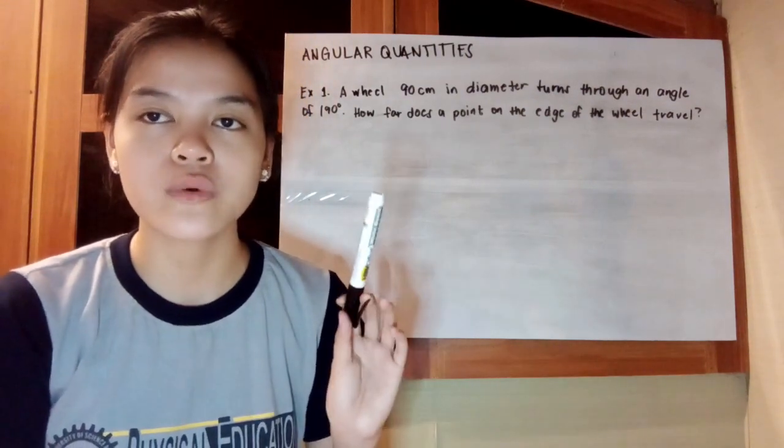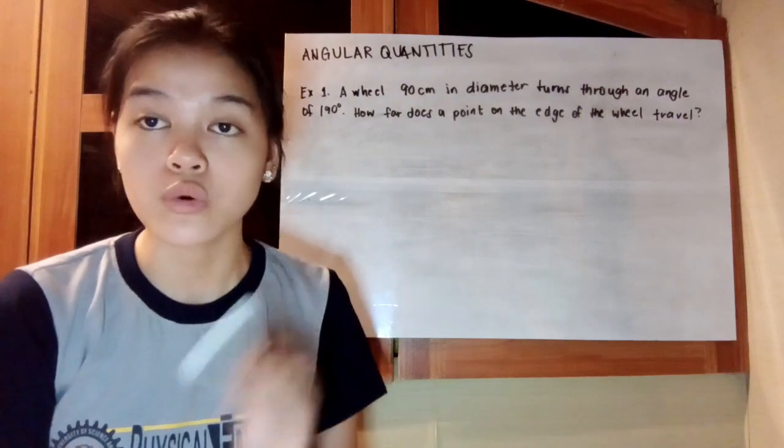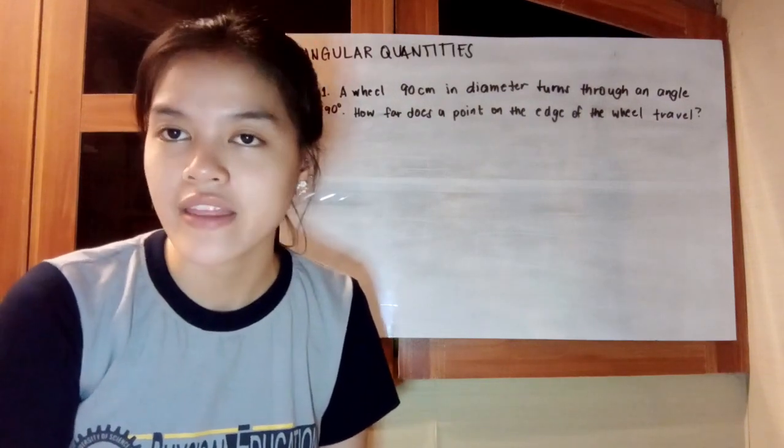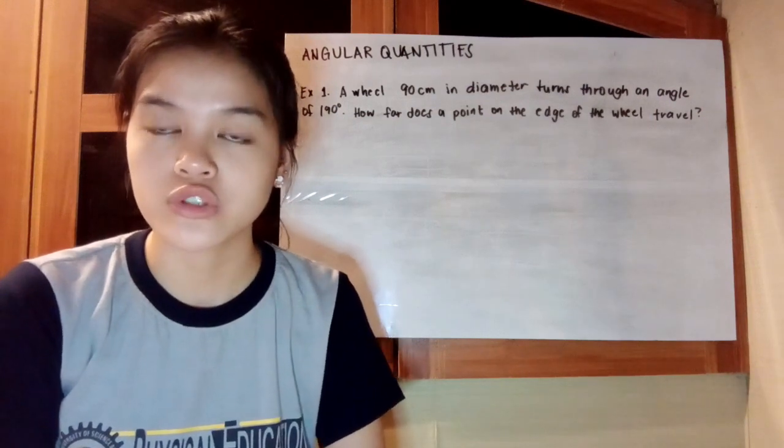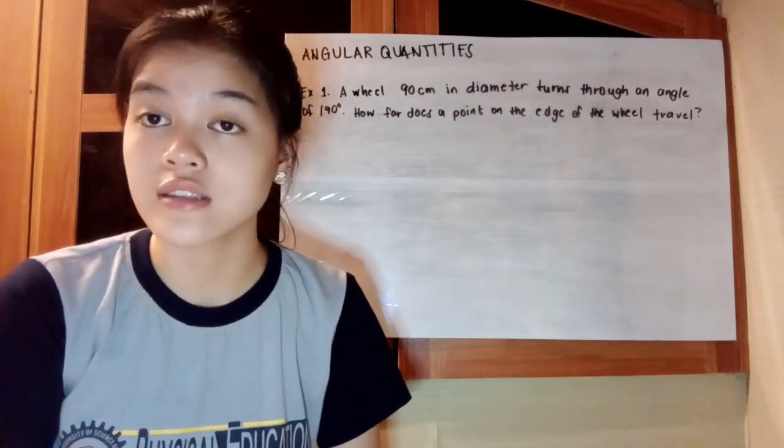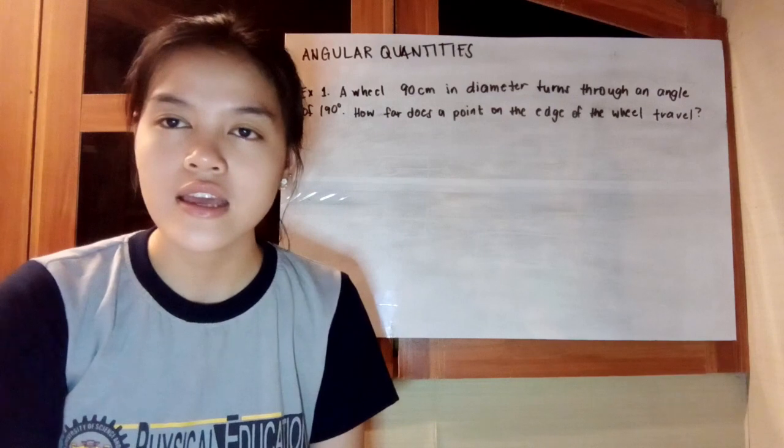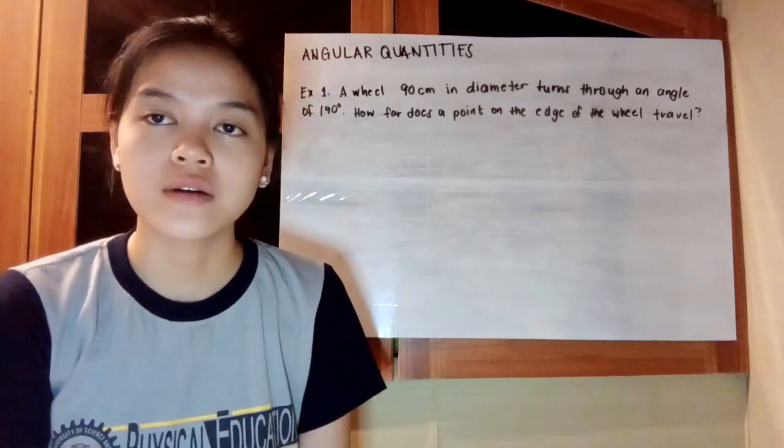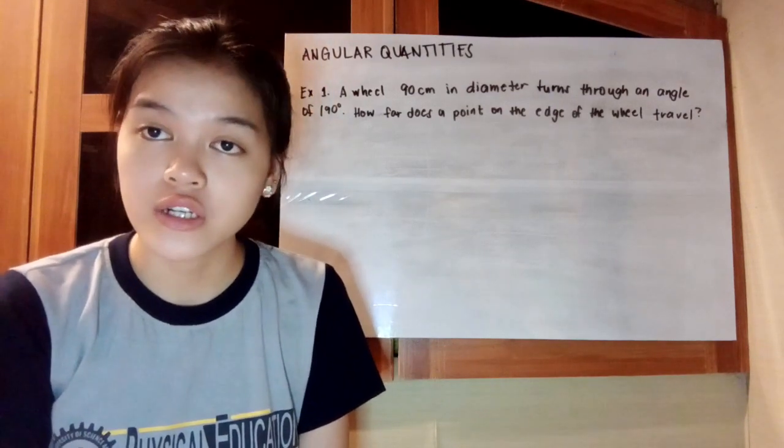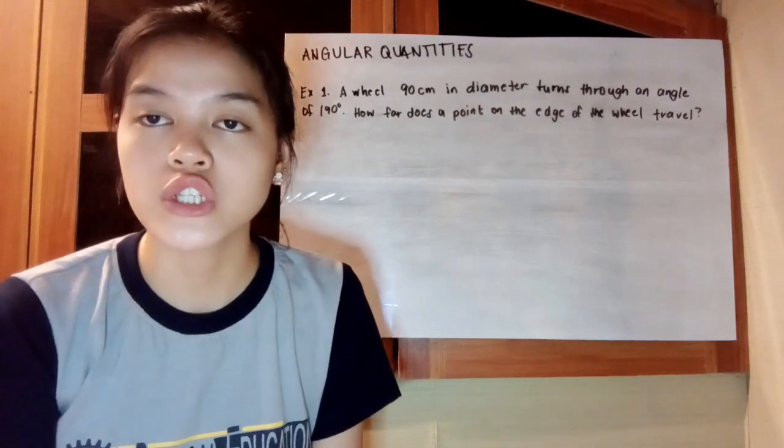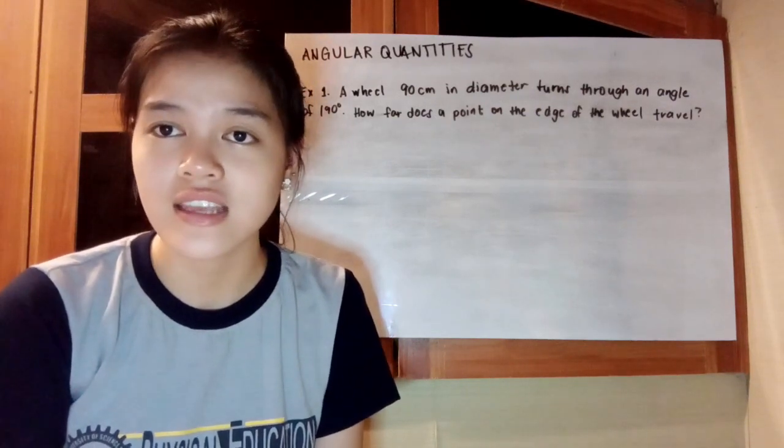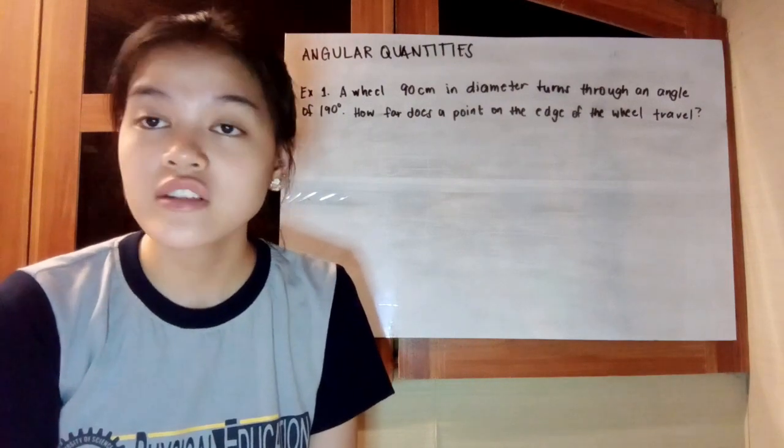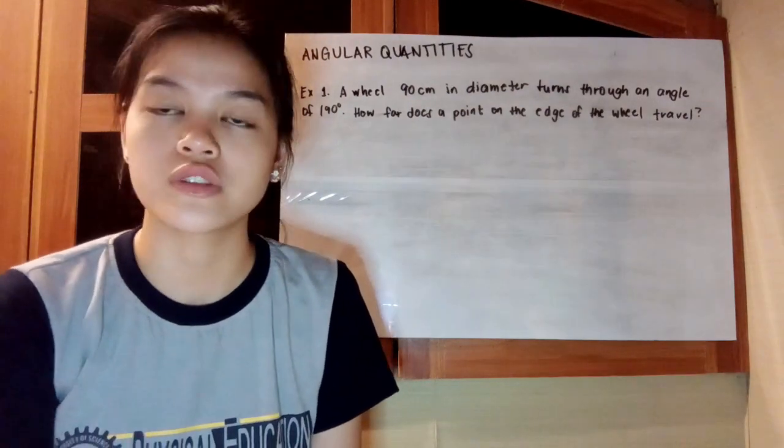In angular quantities, we're talking about rotational motion, which is in a circular path. For example, X in linear motion is considered as the displacement, or the distance from one point to another. In angular quantities, the displacement is considered as the angle theta, which is the arc distance within a circle.